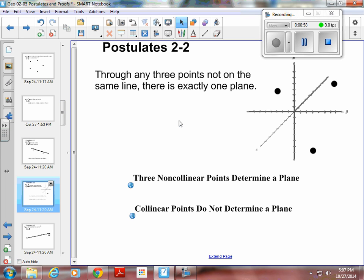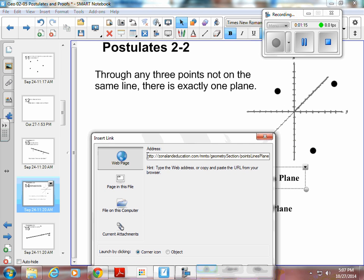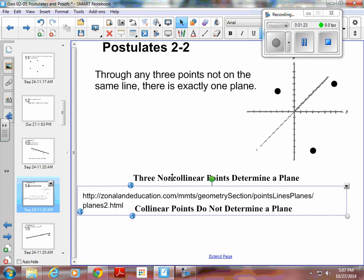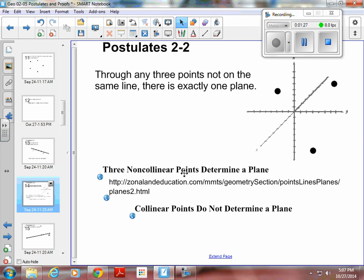And my next one, 2-2. Through any three points not on the same line, there is exactly one plane. So if you wanted to see a video, let me see if I can get to my link here. This is a great link right here. That video is actually at that place. If you would do a Google search for three non-collinear points determine a plane, you should come up with that.